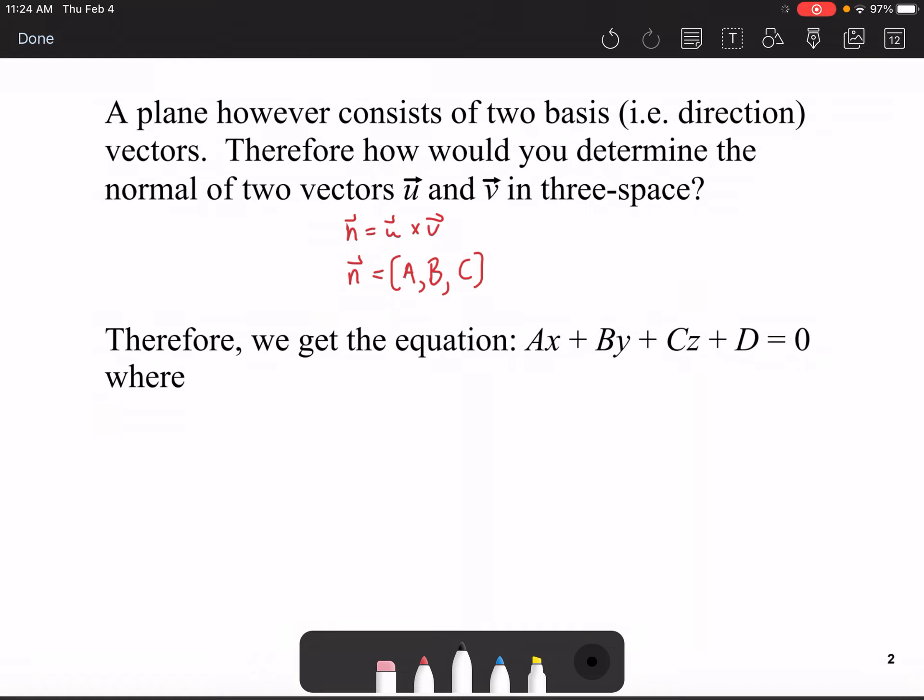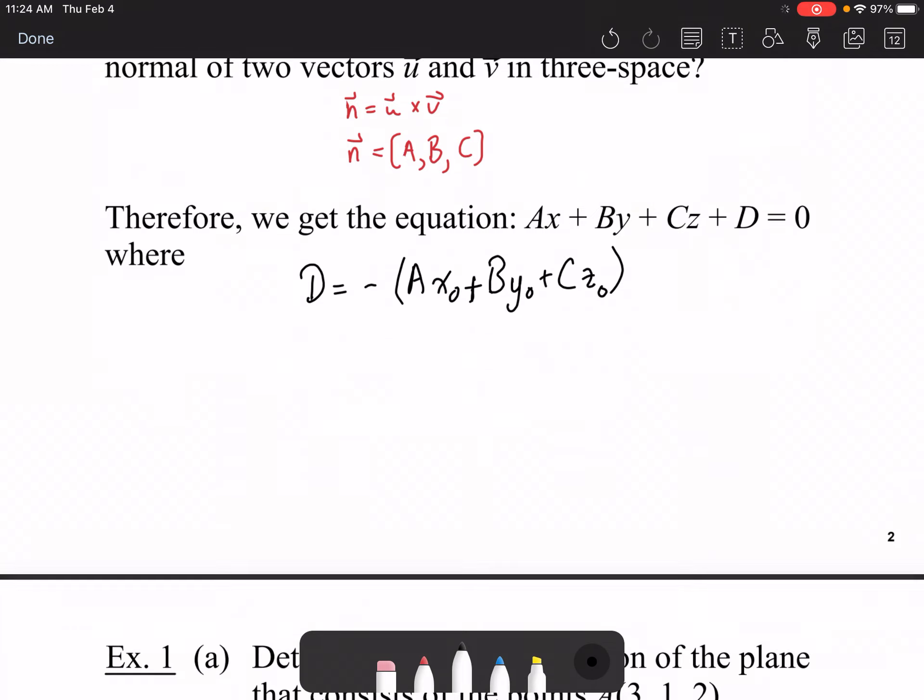And just like finding the equation of a Cartesian line in two dimensional space, to find a plane in three dimensional space, to find the value of D, you're going to take the negative of the A value times the x of the original point, plus B times y sub zero of the original point, plus C times z component of the original point. So let's see how this works out in an example here.